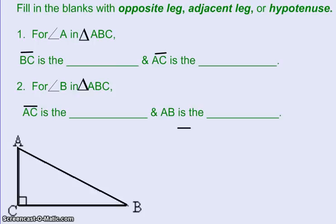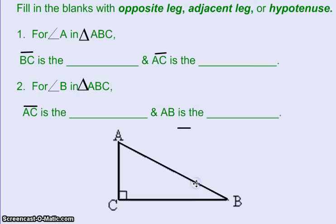So let's try a few things here. We have a picture of a right triangle ABC. We're going to fill in the blanks, and it always just depends on what perspective we're looking from. So for problem one, it says for angle A. That means we're going to be looking from the perspective of angle A in our triangle. They want to know what BC is. Well, BC is this side here.